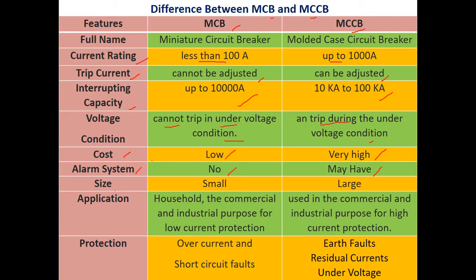As seen in the previous slide, the size of MCB is very small in comparison to MCCB, which has a very large size. Regarding applications, MCBs are generally found in household and commercial applications for low current protection, whereas MCCBs are used for commercial and industrial purposes, providing high current protection.